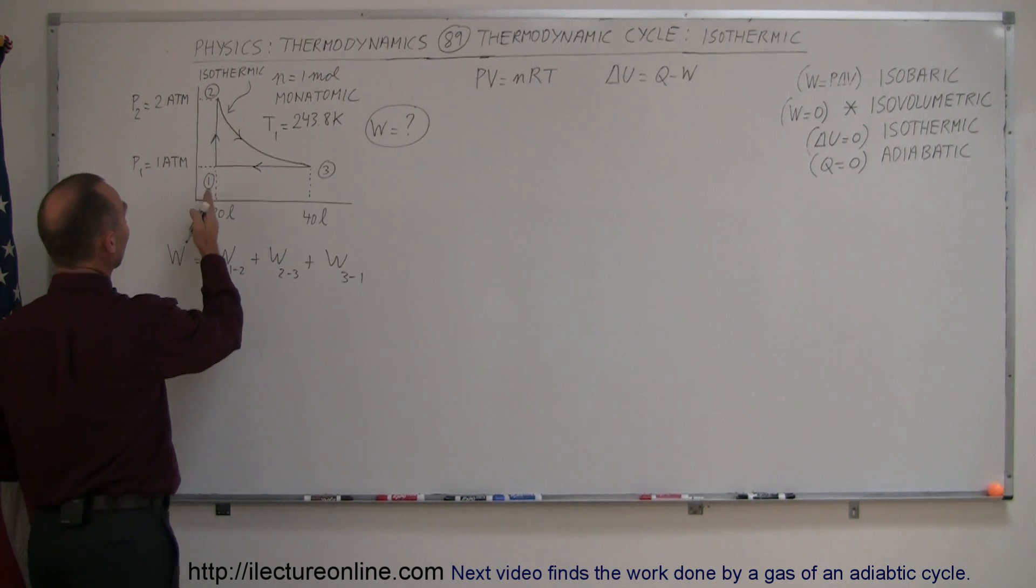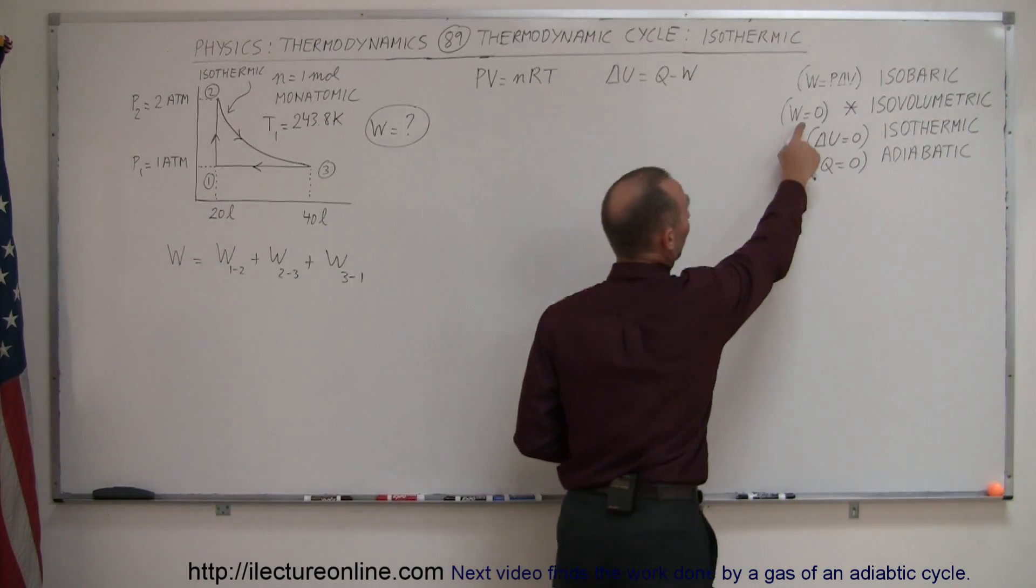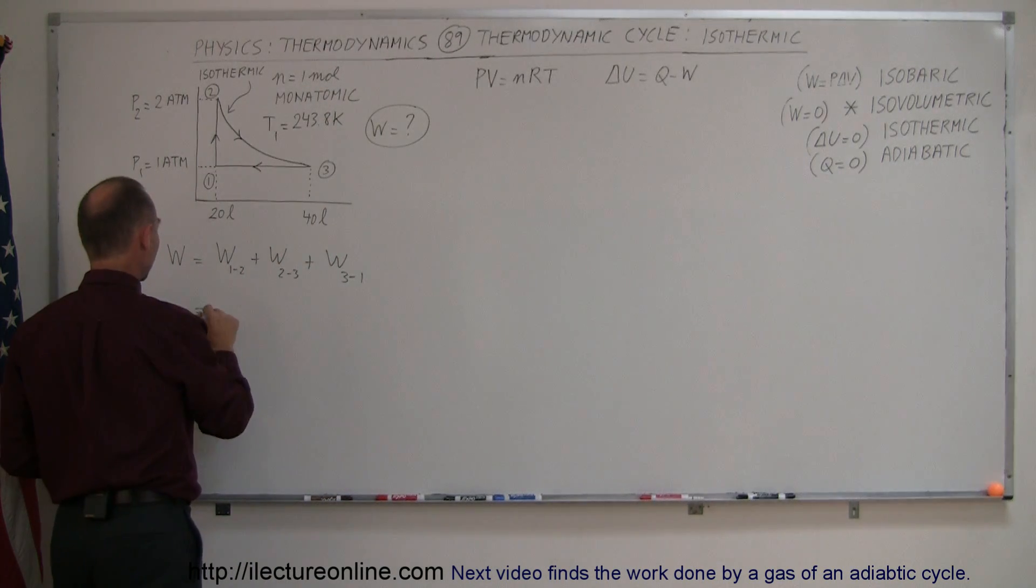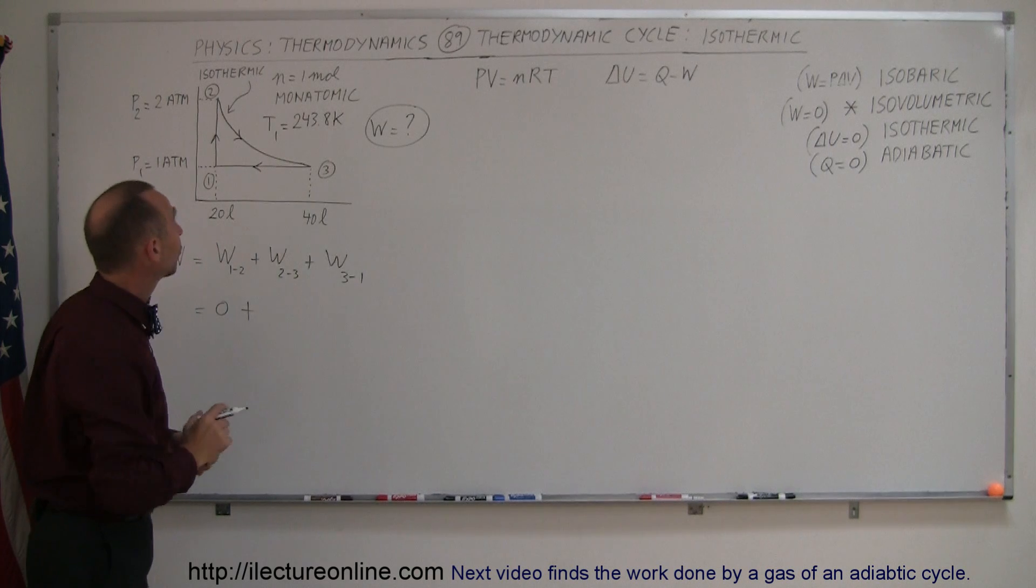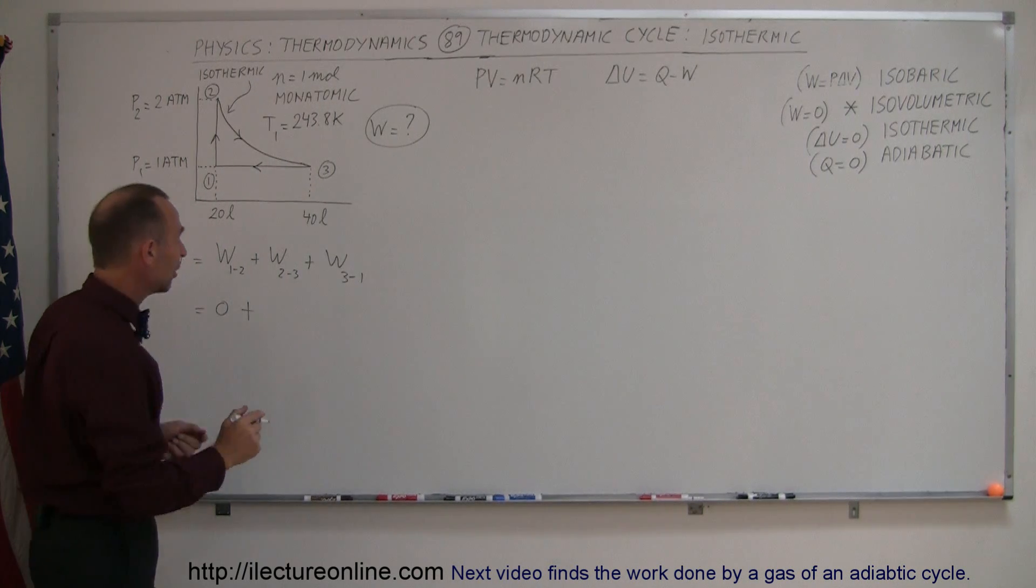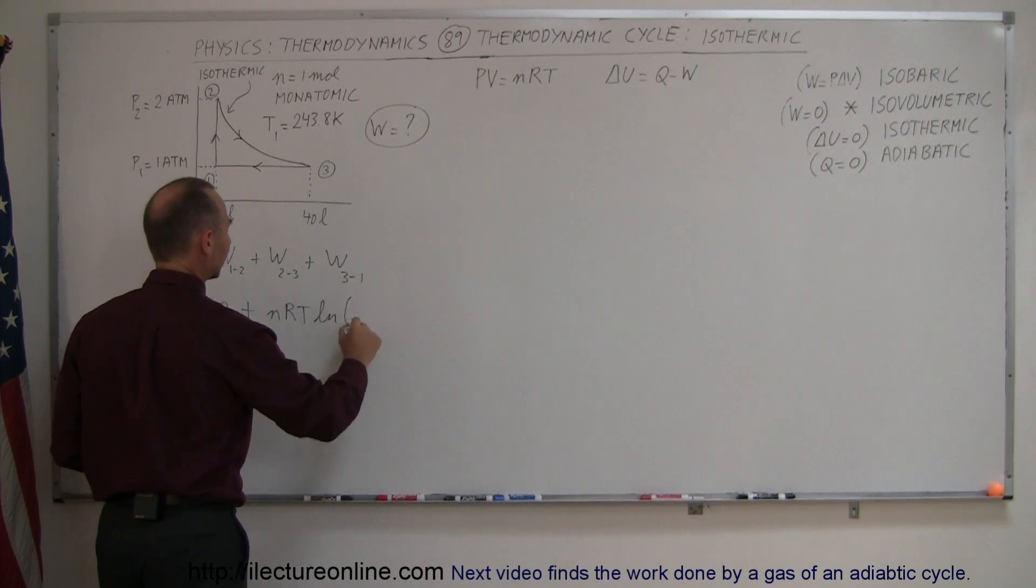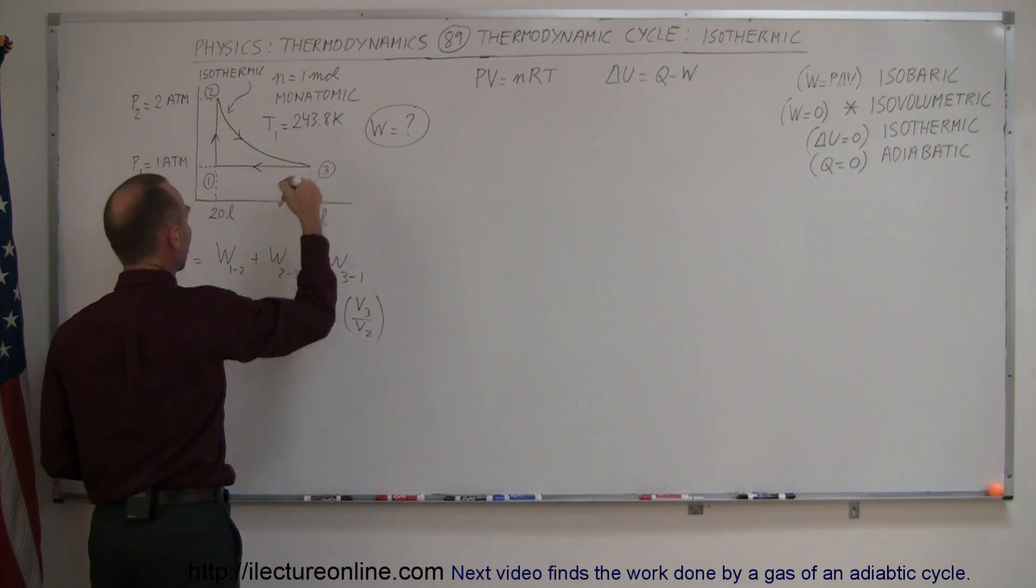Now the first one is easy because that's an isovolumetric process, and remember in an isovolumetric process work done is equal to zero, so we don't have to worry about anything there. This is simply zero, plus the work done in the isothermic process. Well the equation is nRT times the natural log of the ratio of the volume in the end state, which is three, divided by the initial state, which is two, so it's going from two to three.